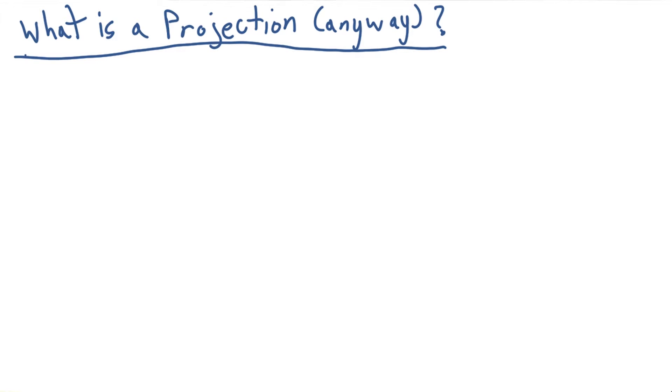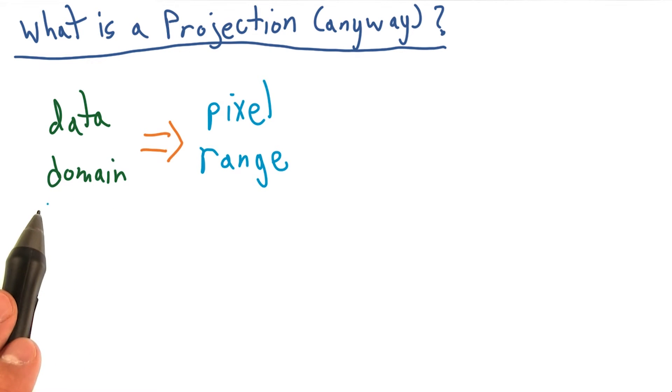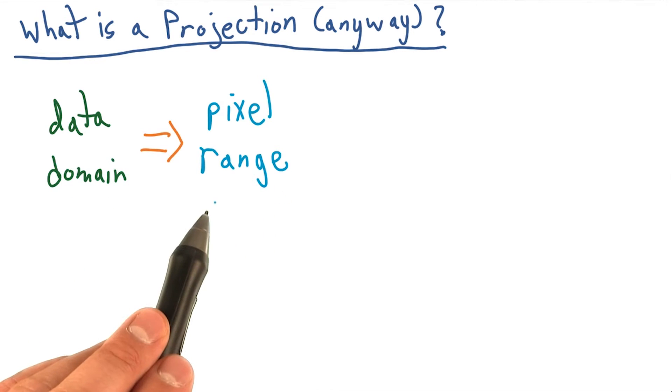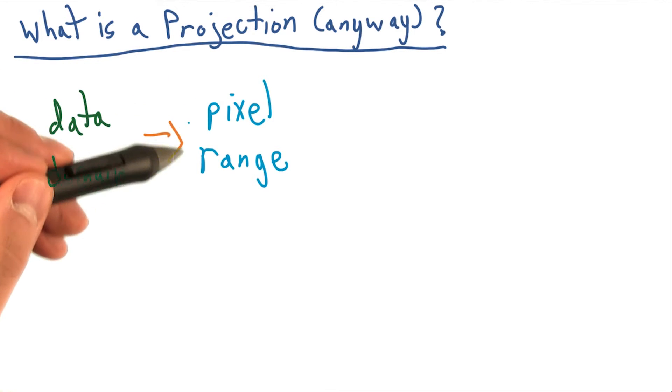To display a map in D3, we do not theoretically have to do anything much different from when we displayed points in a scatter plot. We simply need to convert from some data representation to a screen representation, or rather go from the domain of our data to some range of pixels to draw on the web page.